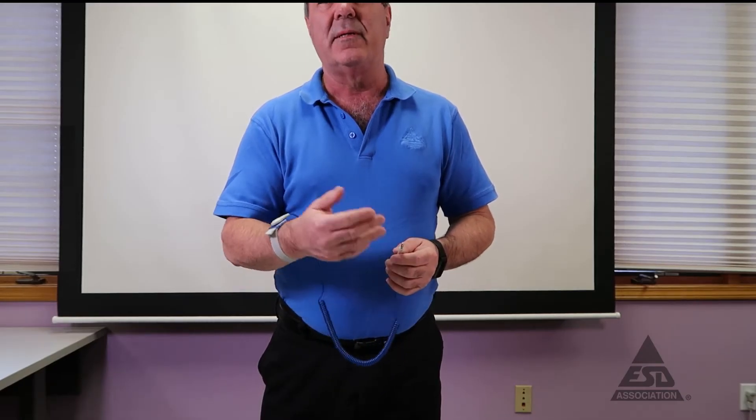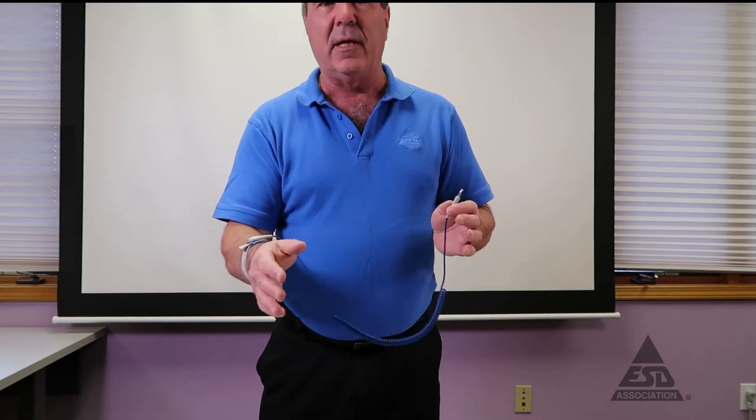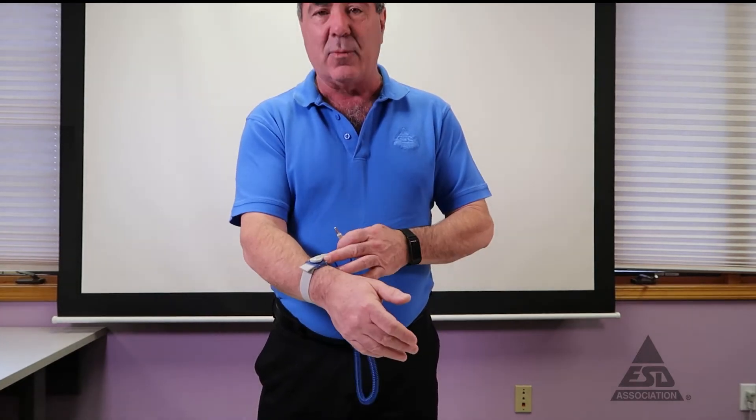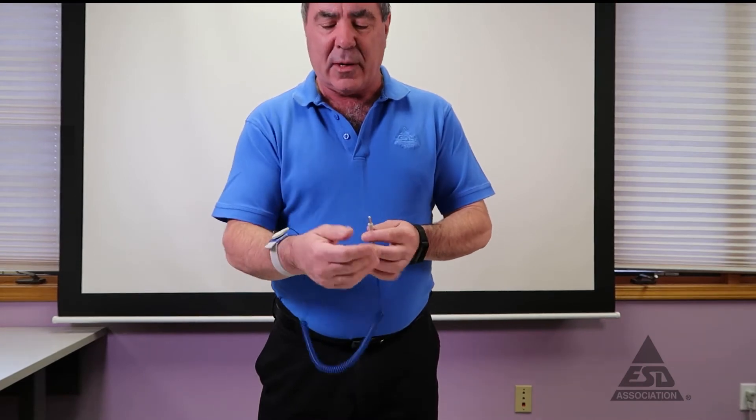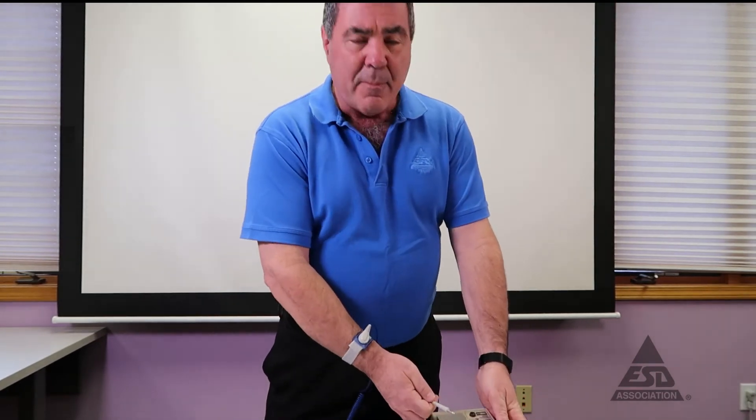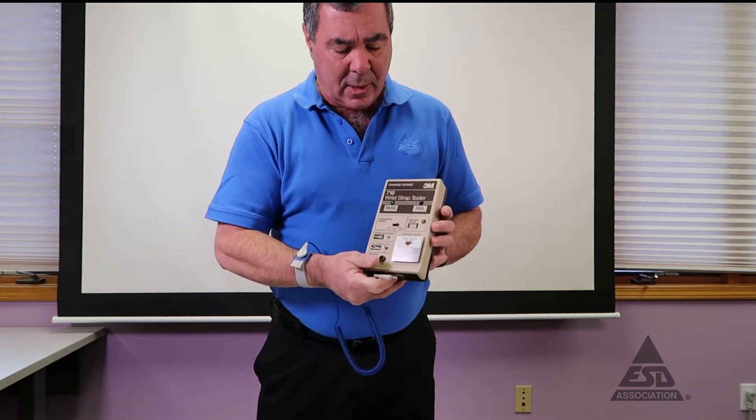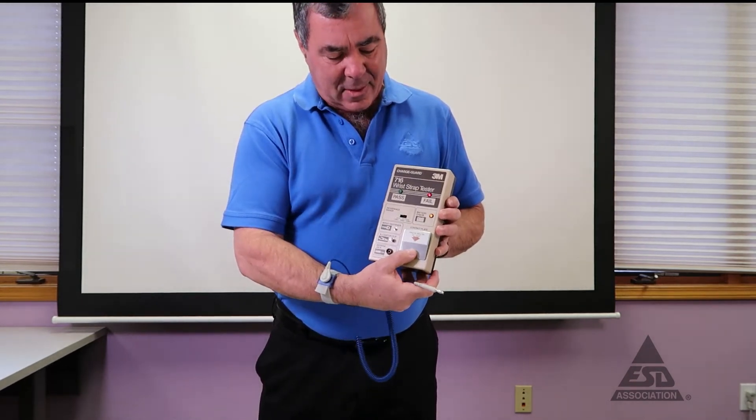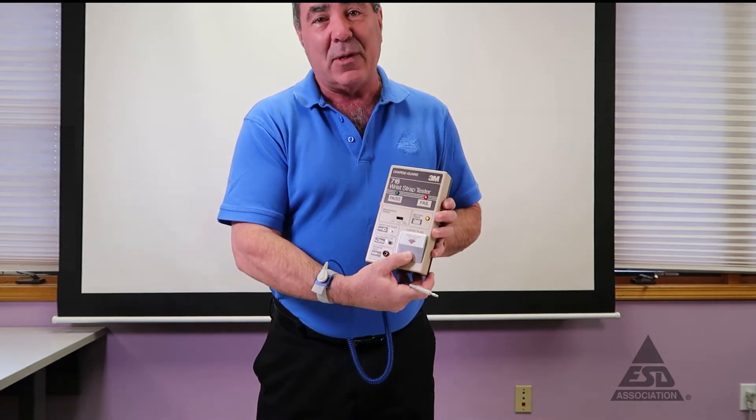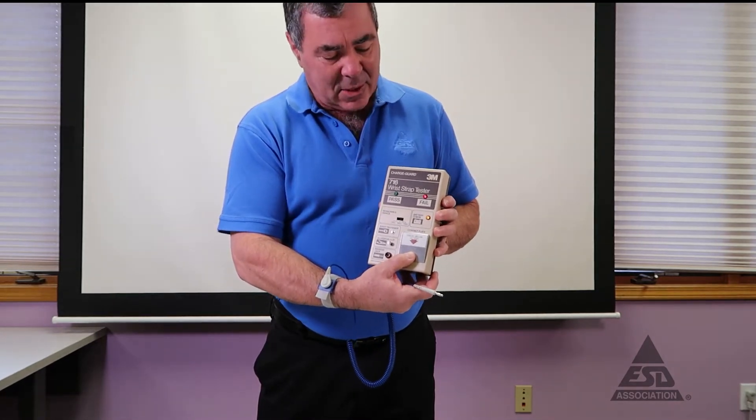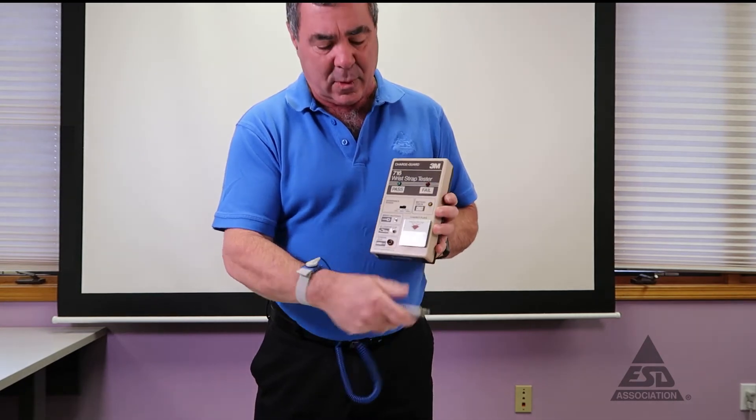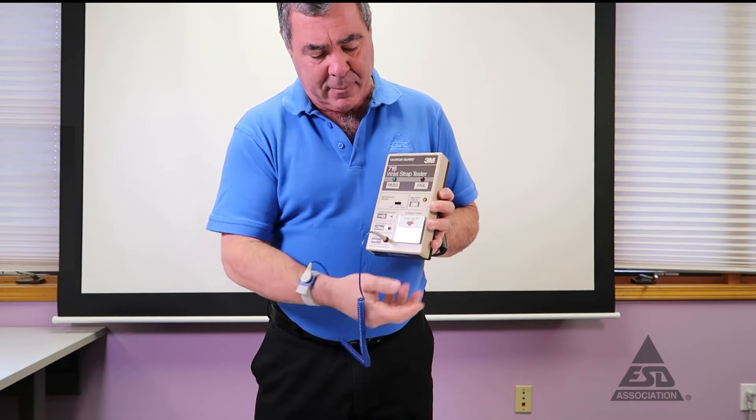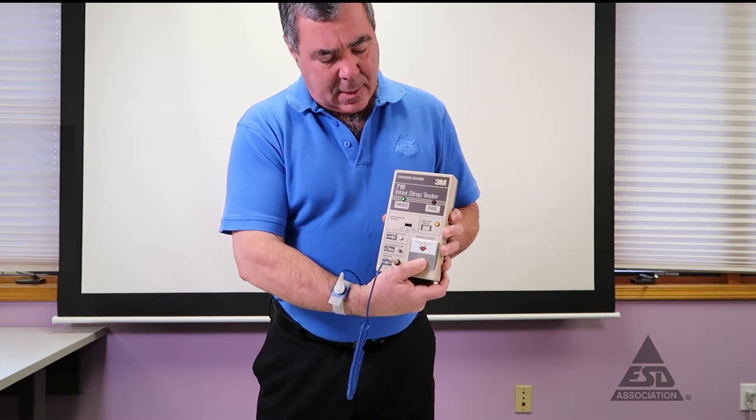The first thing we want to demonstrate is testing what we call daily wear, or the most common type of wrist strap. This is a single wire wrist strap that has a one megaohm resistor in here. We're checking for continuity. There are many different types of wrist strap testers on the market. This is one in particular. First you get a fail because I'm not plugged in, but it does check to make sure the battery's working and that this is working. For this tester, simply plug it into banana jack.